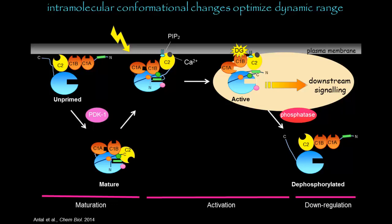Had we not had these intramolecular conformational changes, protein kinase C would have very high basal signaling. One of the things I'd like to convey today is that maintaining the level of protein kinase C signaling output is essential for homeostasis, and there are many ways to do that, but here we have shown that intramolecular conformational changes tune the diacylglycerol sensor for optimal signaling. Thank you for your attention.